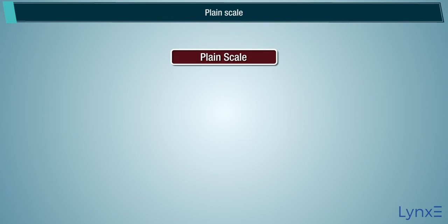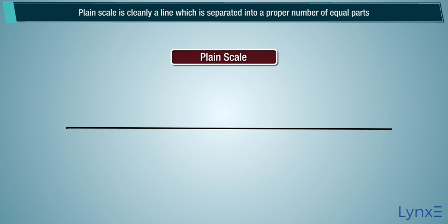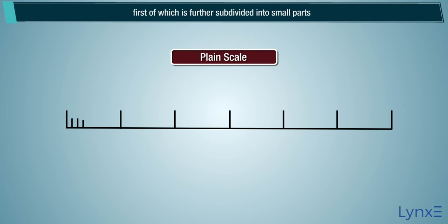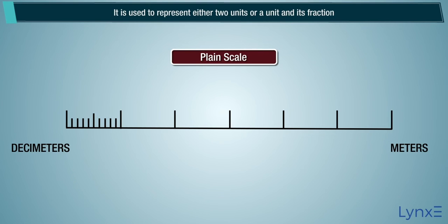Plane Scale is a cleanly aligned line which is separated into a proper number of equal parts, the first of which is further subdivided into small parts. It is used to represent either two units or a unit and its fraction.